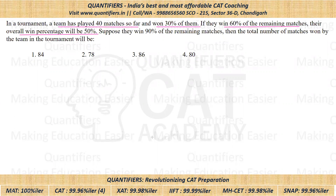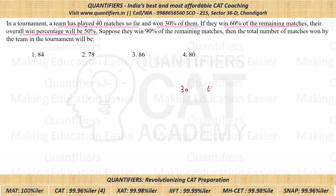Just by reading this information, I hope you can easily figure out that here we can apply allegation. The number of matches they have played till now — in that they have won 30% — and in the remaining matches they will be winning 60%, which will make their overall winning percentage 50%. That 50 comes in between, so we apply allegation. This difference comes out to be 10 and this is 20, so the ratio comes out to be 1:2.